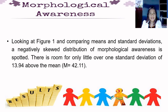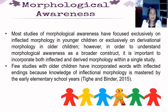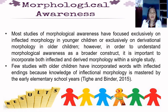Looking at Figure 1 and comparing means and standard deviations, a negatively skewed distribution of morphological awareness is spotted. There is room for only a little over one standard deviation of 13.94 above the mean of 42.11. Most studies of morphological awareness have focused exclusively on inflectional morphology in younger children or exclusively on derivational morphology in older children. However, in order to understand morphological awareness as a broader construct, it is important to incorporate both inflectional and derivational morphology within a single study. Few studies with older children have incorporated words with inflected endings because knowledge of inflectional morphology is mastered by the early elementary school years. This is according to Teghe and Binder of 2015.